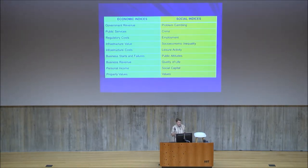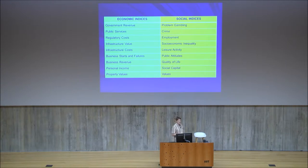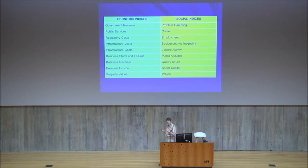This is an elucidation of the various economic indices and social indices that we've used in Massachusetts and other jurisdictions in order to identify what needs to be measured in each area. The important thing is not that you have the exact same list, but that you comprehensively assess all the social impacts and all the economic impacts.